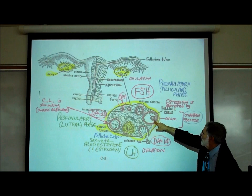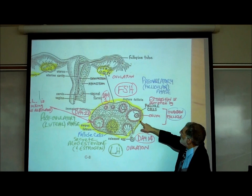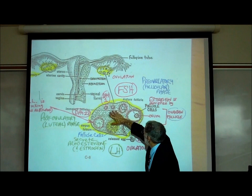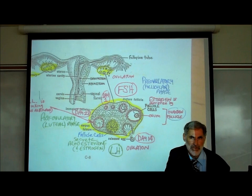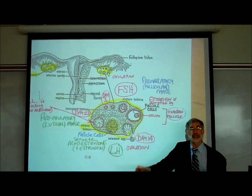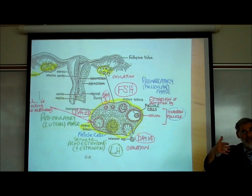FSH not only causes this ovarian follicle to develop, it causes the follicle cells to secrete estrogen. An ovarian follicle is a structure that contains the ovum or egg, surrounded by follicle cells — together that's called an ovarian follicle. FSH causes it to grow and causes the follicle cells to secrete estrogen into the bloodstream. These follicle cells have FSH receptor sites that, when activated, cause them to secrete estrogen.